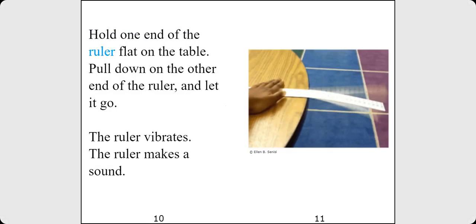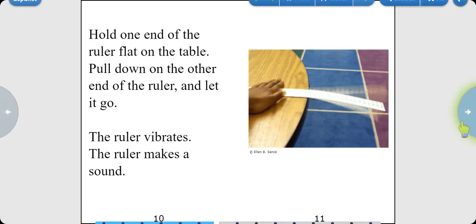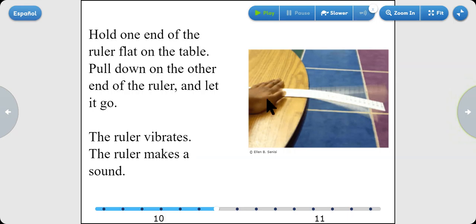Hold one end of the ruler flat on the table. Pull down on the other end of the ruler and let it go. The ruler vibrates. The ruler makes a sound. This is a ruler.